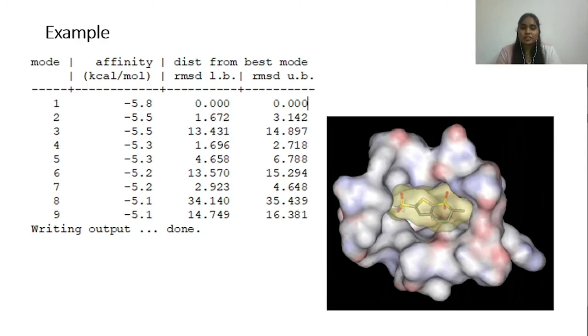So I have actually given here the example of one of the components of sandalwood oil with Bax protein of breast cancer. And this is a visual representation of, this is actually after docking. So you can see that the target is here and the ligand is sitting here. So this is the best confirmation that I've taken that is with docking score minus 5.8.